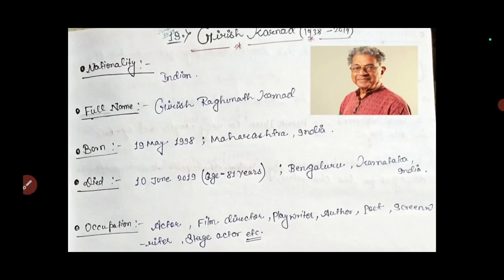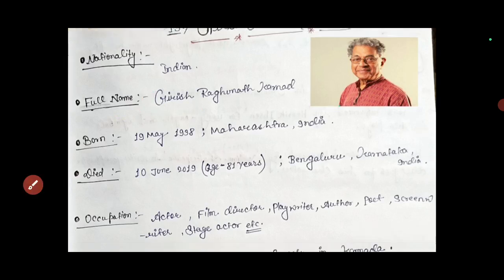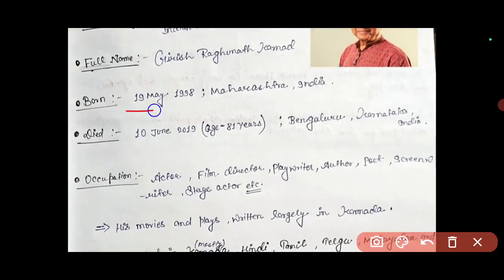Girish Karnad was an Indian writer. His full name was Girish Raghunath Karnad. He was born on 19th May 1938 in Maharashtra, India. He died on 10th June 2019 when he was 81 years old.